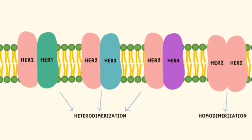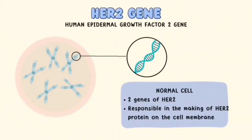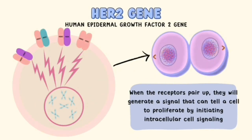HER2 receptors sit within the surface of certain cells. HER2 receptors will bind with other HER family members, or HER2 itself, to form homo- or heterodimerization. The human epidermal growth factor 2 gene, often known as HER2, is in charge of producing the HER2 protein found on the cell membranes. The HER2 gene has two copies, and together they produce precisely the proper amount of HER2 receptors for normal cell activity. When the receptors pair up, they generate a signal that can tell a cell to proliferate by initiating intracellular cell signaling.